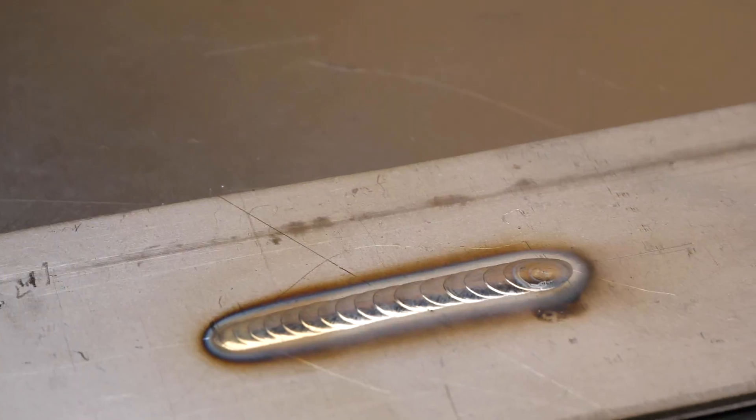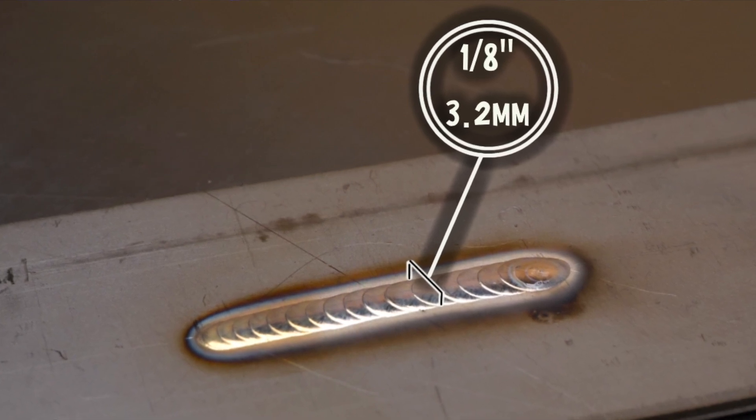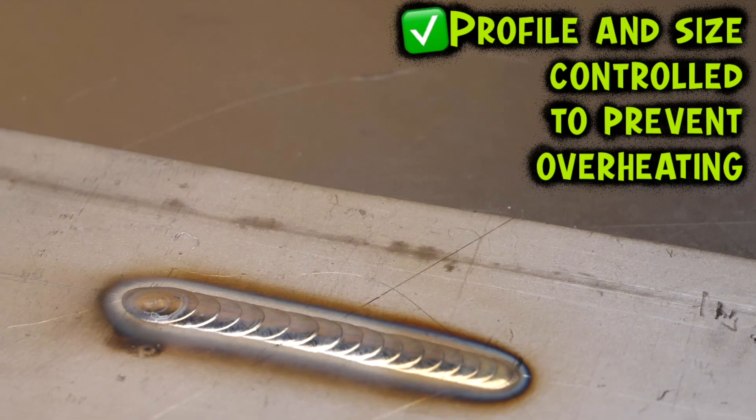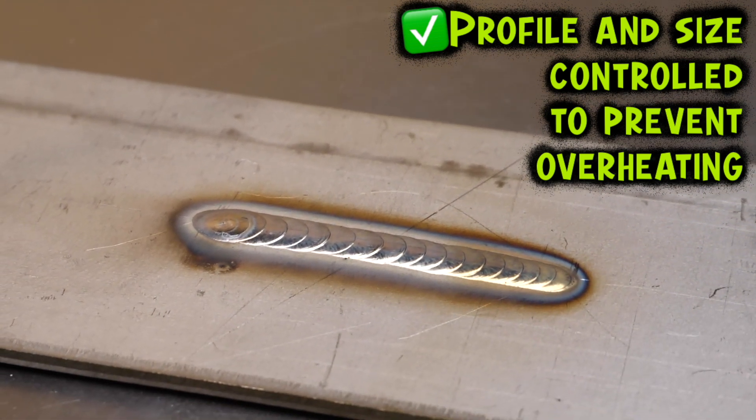I always recommend start with shorter passes that are quite narrow. When I teach people how to TIG weld, we legitimately start out with running passes that are only about an eighth of an inch or 3.2 millimeters wide. They're very narrow and honestly some of the longest passes we're going to go for is going to be about 25 millimeters or like an inch long. We're going to work on keeping things controlled and prevent them from becoming excessively hot.